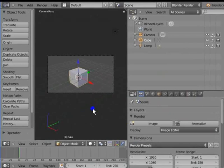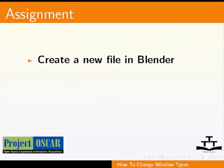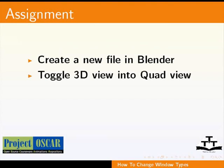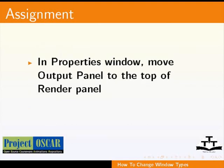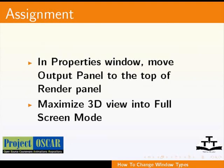So, this is how we resize any window, toggle between different windows, and split the windows and merge them back together in Blender. Now create a new file and try to toggle the 3D view into quad view. Split the Outliner window and merge the new panels back. In the Properties window, move the Output panel to the top of the Render panel. And maximize the 3D view into full screen mode.